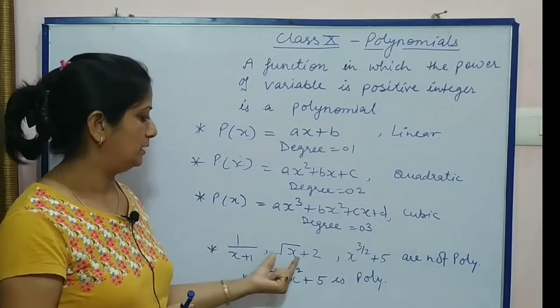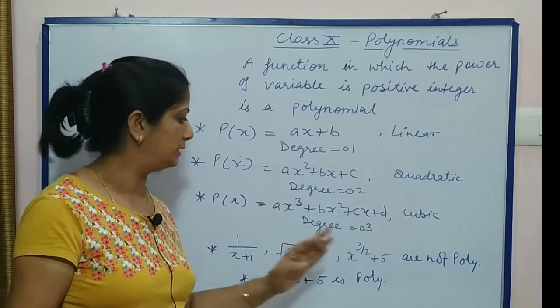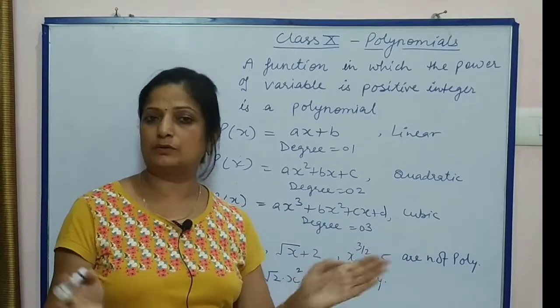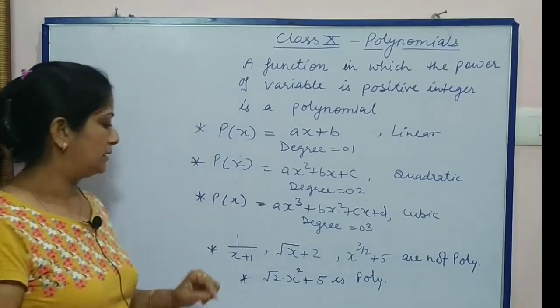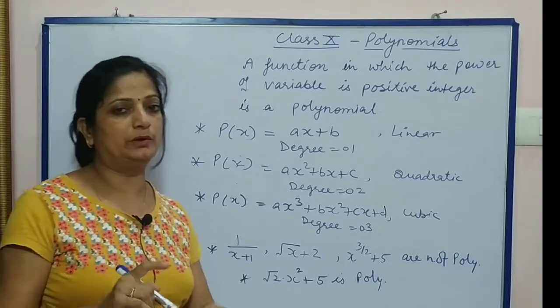But when power of x, yani power of variable, is in negative value, that means 1/x + 1 or in fraction - for example, √x + 2, x^(3/2) + 5, these are not polynomials. But √2 × x² + 5 is a polynomial.